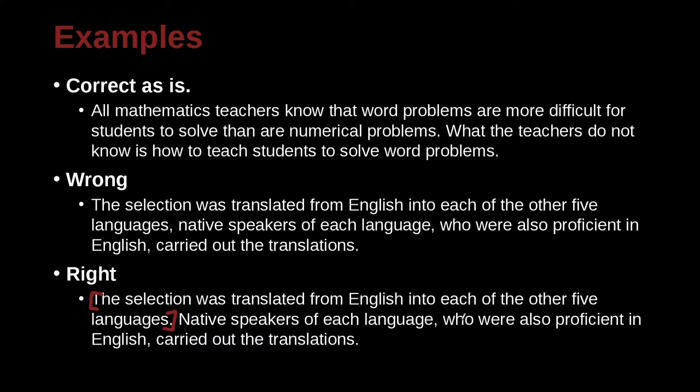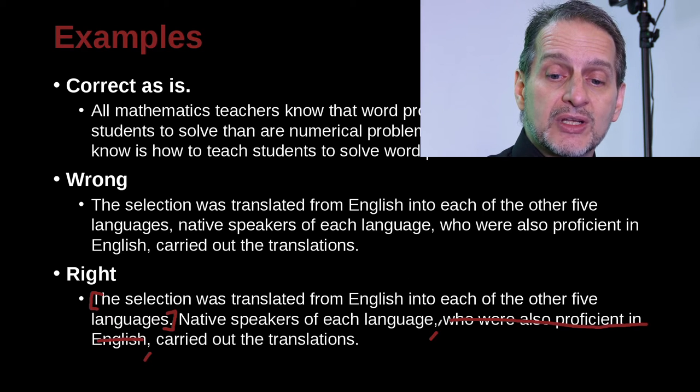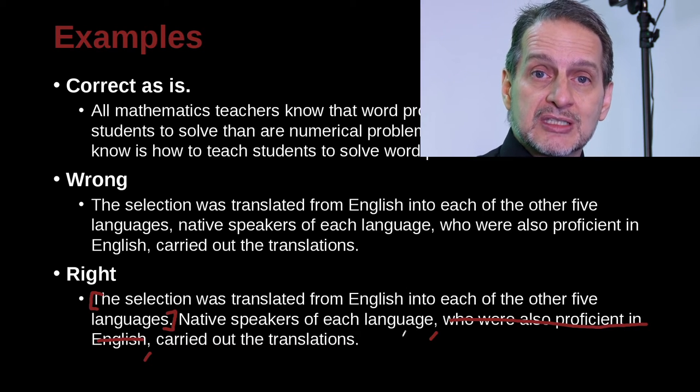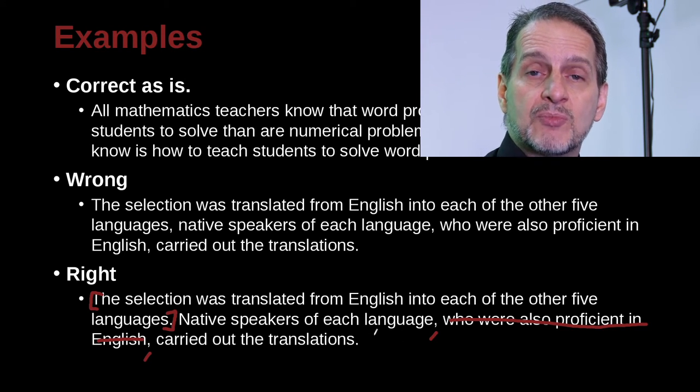Native speakers of each language, who were also proficient in English, carried out the translations. Now here we have a comma and a comma. So if we take out this bit here, can this be a whole sentence? Native speakers of each language carried out the translations. Yes, that can be a whole sentence. So that's a good example of a non-restrictive adjective clause. That is, we need a comma before, we need a comma after, because the sentence still can be a sentence and it still makes sense. It still has the same basic idea.